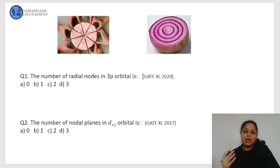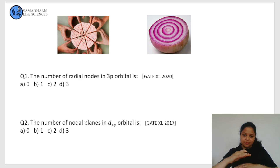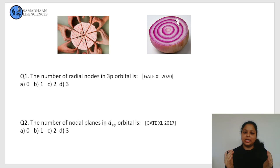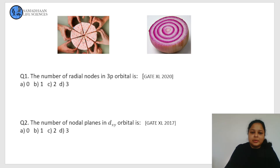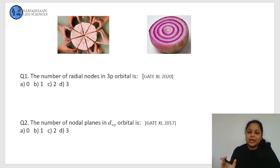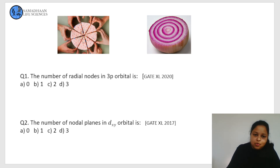Now let's visualize the nodes. For a radial node, imagine cutting an onion along the cross section — the nucleus is at the center and the spherical shell structures are our radial nodes. For the angular node, imagine cake slices. Along the perimeter of the cake there is maximum cream, similarly there is maximum probability of finding an electron there, but along the cuts there is no cake — similarly, no probability of finding electrons. Those are our angular nodes.